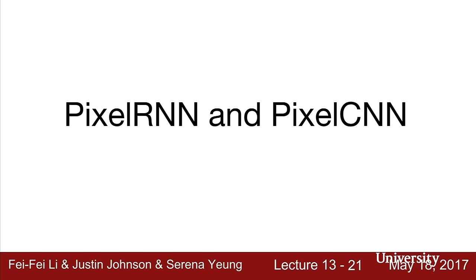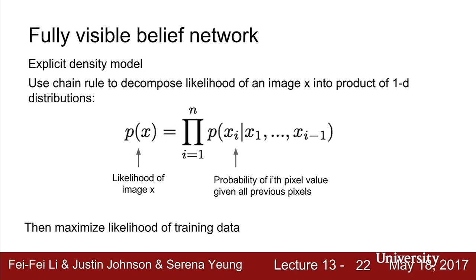Pixel RNNs and CNNs are a type of fully visible belief network that models a density explicitly. We have image data X, and we want to model the probability P(X). We use the chain rule to decompose this likelihood into a product of one-dimensional distributions: the probability of each pixel X_i conditioned on all previous pixels X_1 through X_{i-1}. The joint likelihood of all pixels is the product of all these individual likelihoods, and we train by maximizing the likelihood of our training data under this defined density.